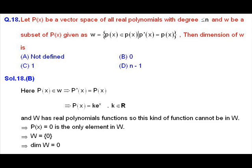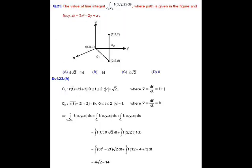If p(x) belongs to W, then p'(x) = p(x), which represents a differential equation. Solving it gives p(x) = C·e^x for some constant C. But this function is not a polynomial, so it cannot belong to W. Therefore W contains only the zero polynomial. W is the trivial subspace of P(x), so the dimension of W is equal to 0.